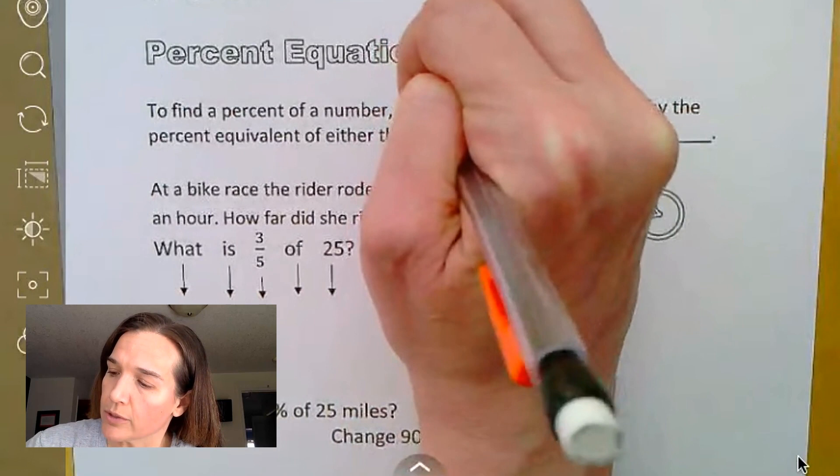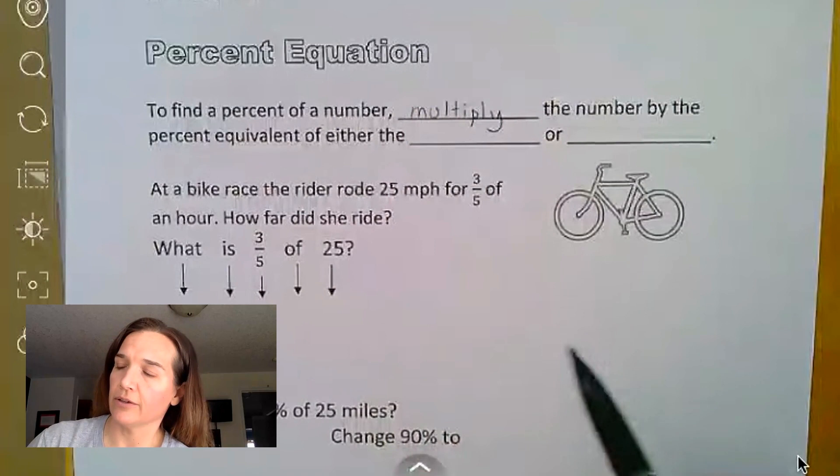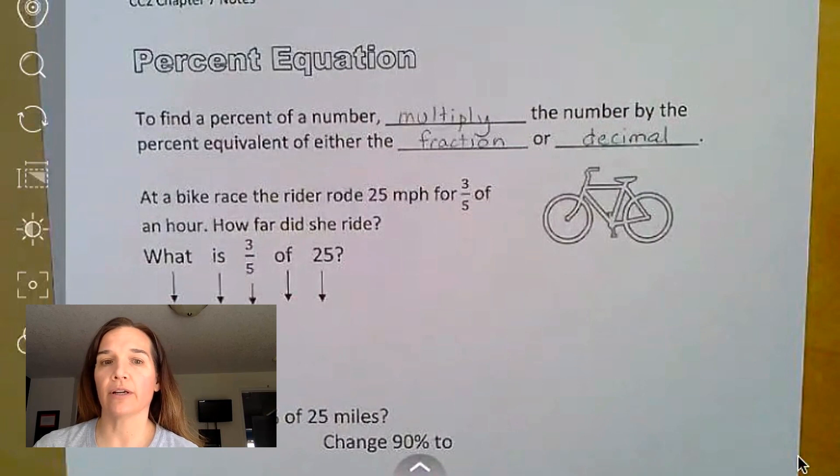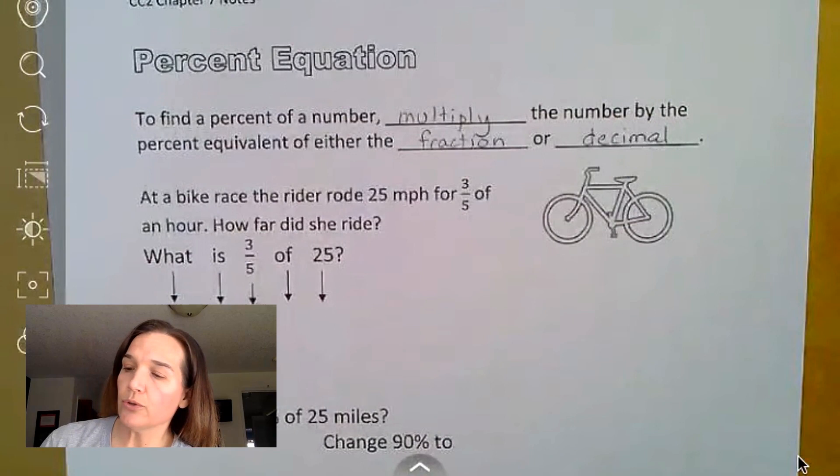So to start with, to find the percent of a number, you just need to multiply the number by the percent equivalent of either the fraction or the decimal. You're not allowed to multiply by a percent, so whatever number you are given as a percent, change to a fraction or a decimal first and then use that.